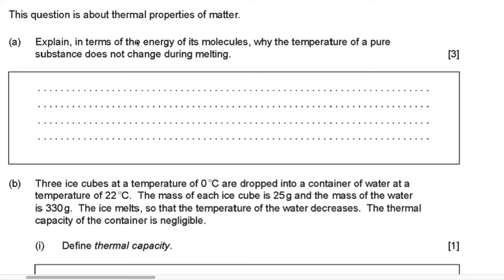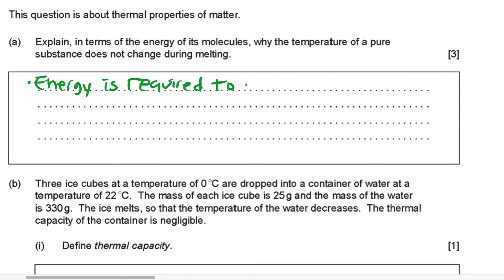This question is about thermal properties of matter. Explain in terms of the energy of molecules why the temperature of a pure substance does not change during melting. During melting, the temperature does not change because energy is required to break bonds — or you can say, to overcome intermolecular forces.